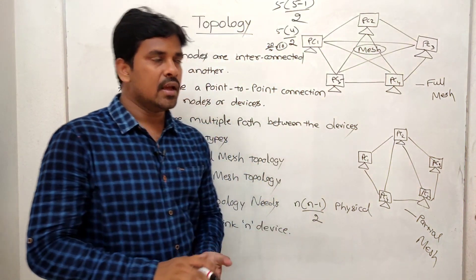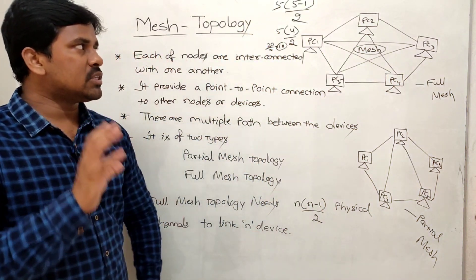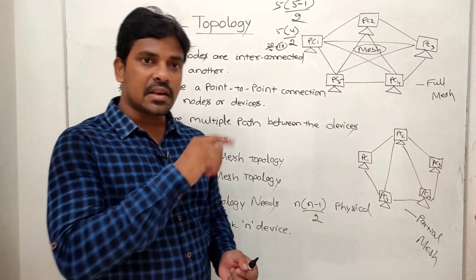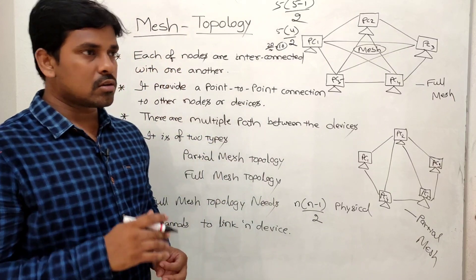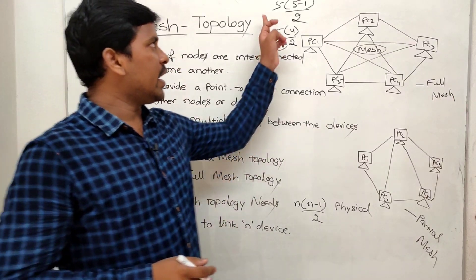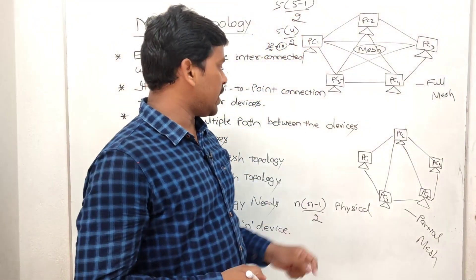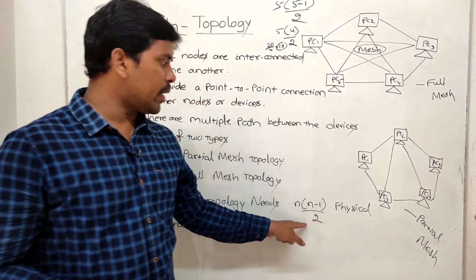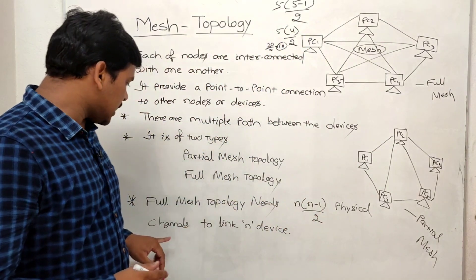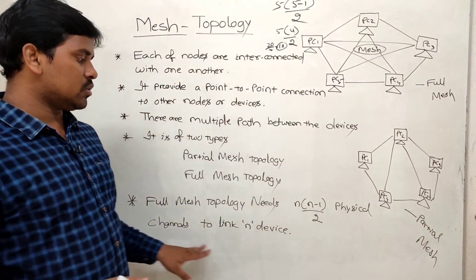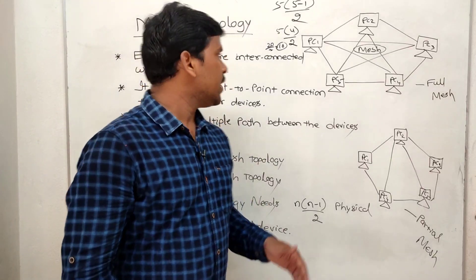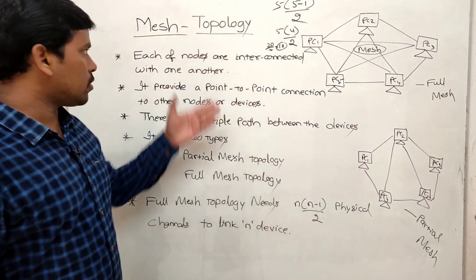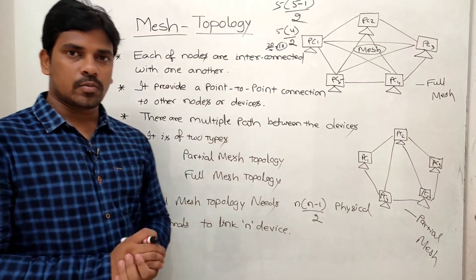So there would be 10 paths total in a full mesh topology with 5 nodes. The formula n × (n−1) / 2 gives the number of physical channels needed to link n devices. This is all about mesh topology.